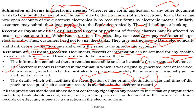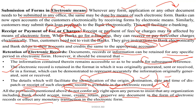The details which facilitate identification of the origin, destination, date and time of dispatch or shift of such electronic record are available in the electronic record. All these details are available in that. All the provisions mentioned above do not confer any right upon any person to insist that any organization, including a bank, should accept, issue, create, retain or preserve any document in electronic form or affect any monetary transaction in electronic form.